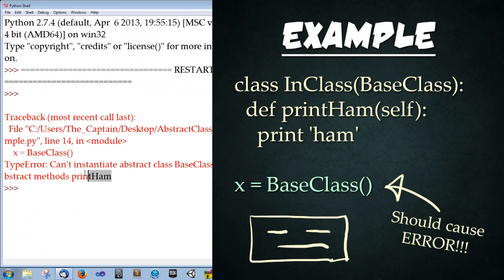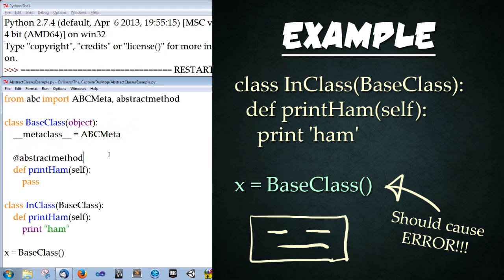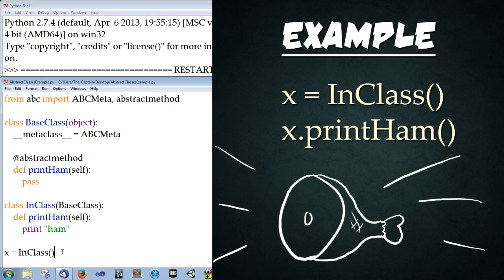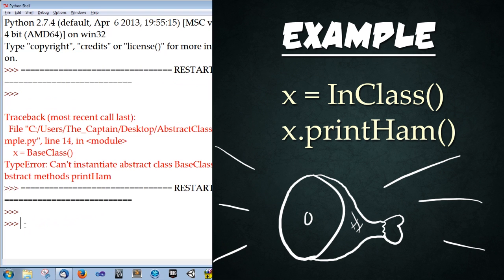The error says: cannot instantiate abstract class with abstract method print_ham. That's basically saying since we have this abstract method and we've declared this as an abstract base class, we cannot instantiate BaseClass. What we can do is instantiate its inheriting class. So type that in below, save, and press F5 to run. There are no errors whatsoever, and now we can just type x.print_ham() to call the function — and it prints 'ham'. That's exactly what we expect.